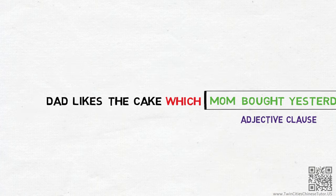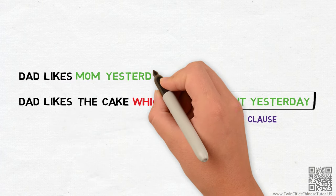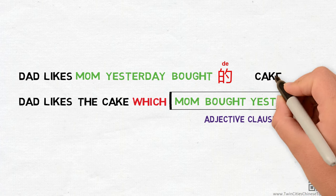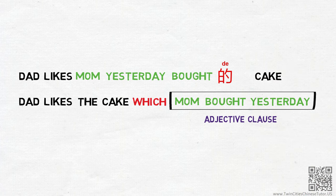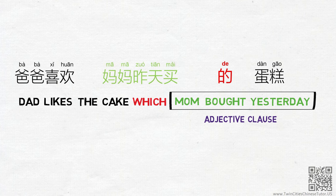Therefore, you will see the sentence be organized as dad likes, mom yesterday bought 的 cake. Or in Chinese, 爸爸喜欢妈妈昨天买的蛋糕.